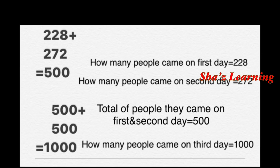We use 0 and balance is 1. The 100s place: 1 plus 2 is 3, plus 2 is 5. We have 500. So 500 is the sum. Now 500 is doubled: third day number of people is 500 plus 500. 0 plus 0 is 0. 5 plus 5 is 10. We got 1000.